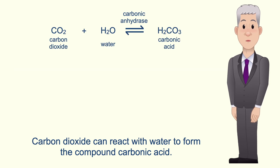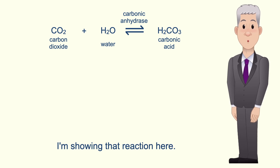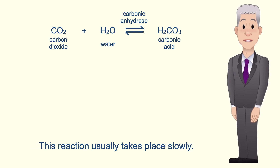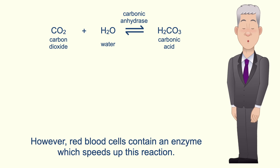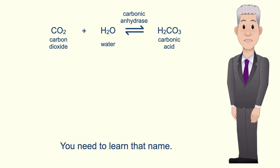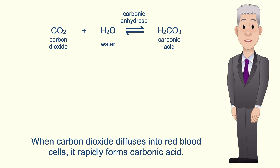Carbon dioxide can react with water to form the compound carbonic acid, and this is a reversible reaction. This reaction usually takes place slowly; however, red blood cells contain an enzyme which speeds up this reaction. This enzyme is called carbonic anhydrase — you need to learn that name. So when carbon dioxide diffuses into red blood cells it rapidly forms carbonic acid.